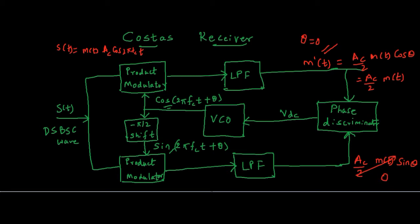Since sin(0) = 0, the Q-channel output vanishes — it is 0. This is one simple case. If this were always the case, Costa's receiver would be of no use, because if you could always generate a carrier with the same phase and frequency, there would be no need for a negative feedback system. But we cannot always generate this type of signal — there will effectively be some phase offset generated by the local oscillator, so θ will not always be 0.